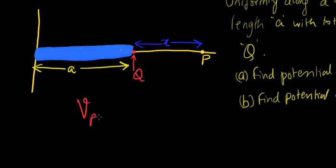VP for the potential at P is K times the charge over the distance between them. Instead of R as the distance, since it's X here, we're going to take X. So it's K times Q over X is the potential at P.